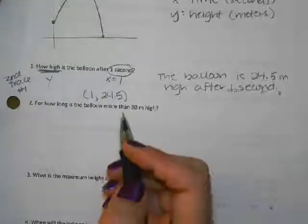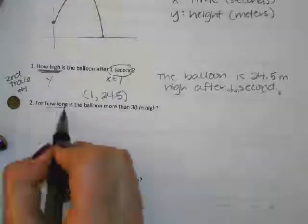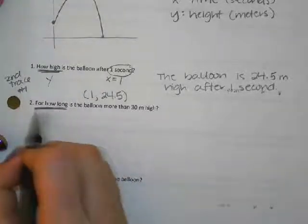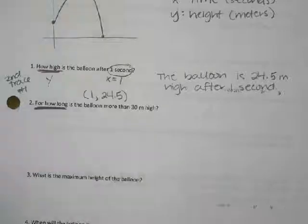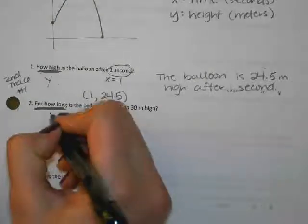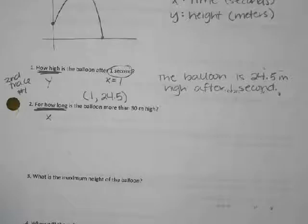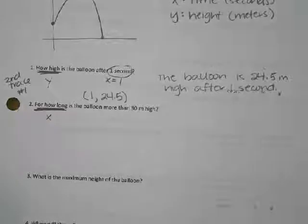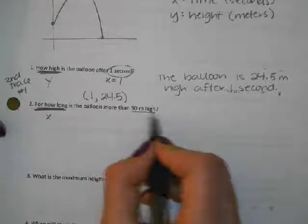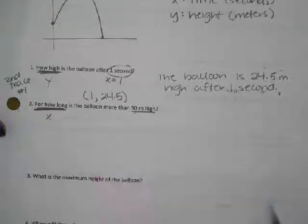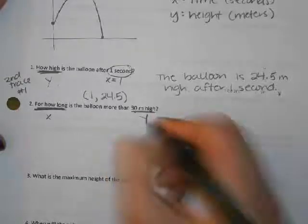The next question says for how long — so are they asking for an x value or a y value? They want x values. For how long is the balloon more than 30 meters high? The 30 meters high is a y value — y equals 30.